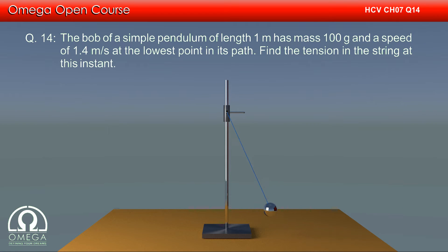The bob of a simple pendulum of length 1 meter has mass 100 gram and a speed of 1.4 meter per second at the lowest point in its path. Find the tension in the string at this instant.